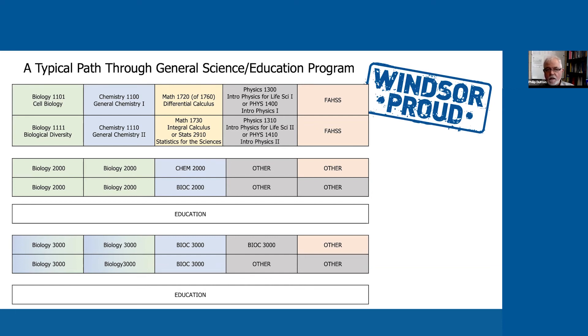The biology, chemistry, and physics courses all have three-hour labs every week for between five and seven weeks of the term, so they are actually quite a substantial amount of work.